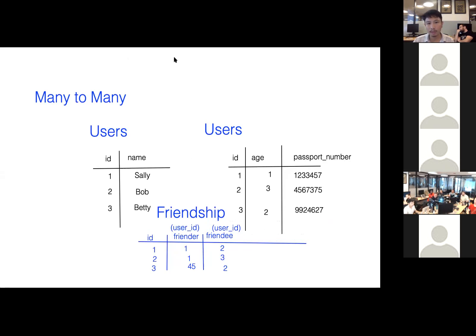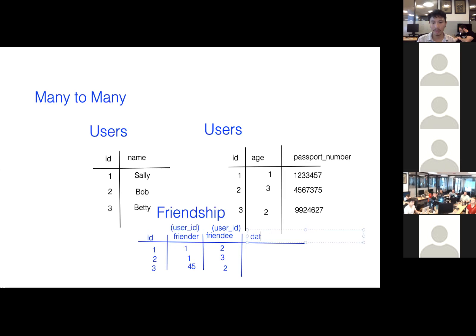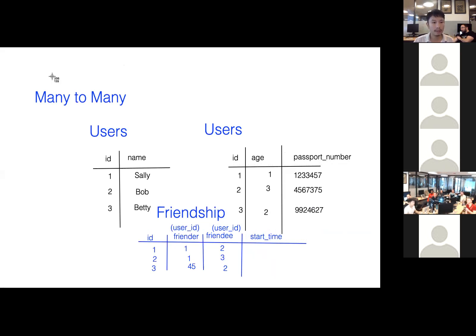Now that I've given it an appropriate name to describe the kind of data it stores, I can add additional data. It's more than just a join table — I can say a start time, I can add all sorts of stuff to pertain to this relationship. Same thing with a group — let's go back to the group example.